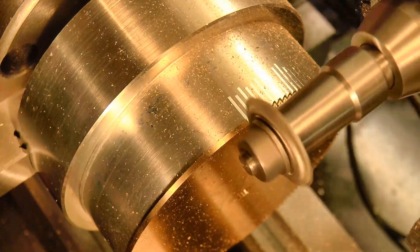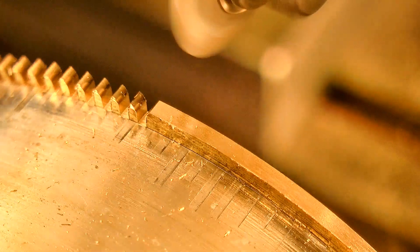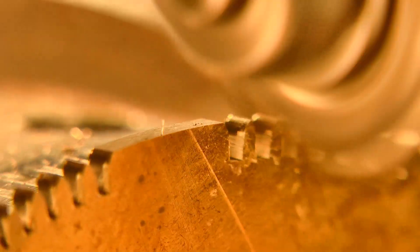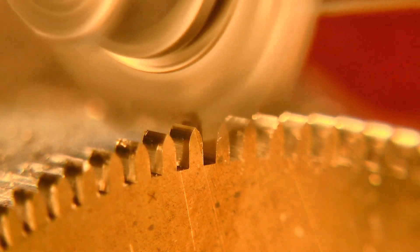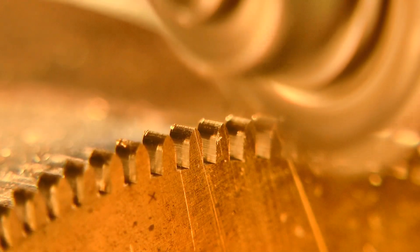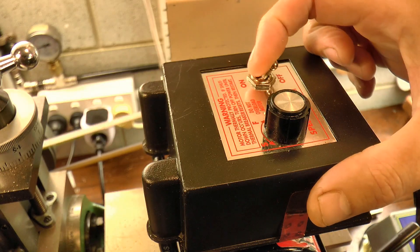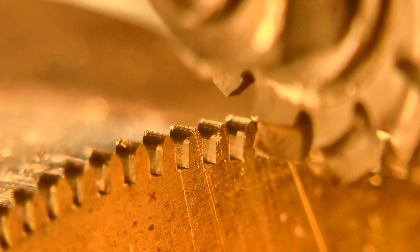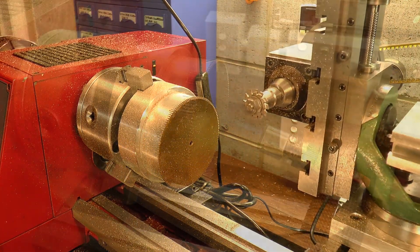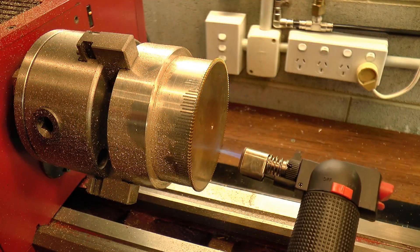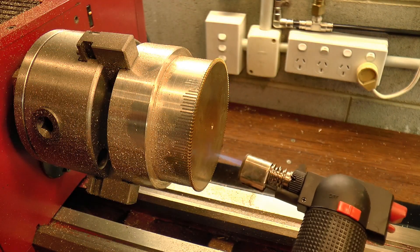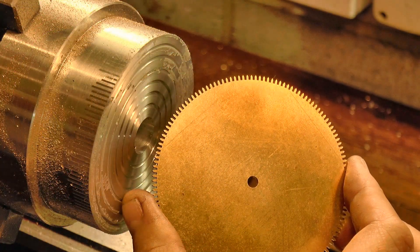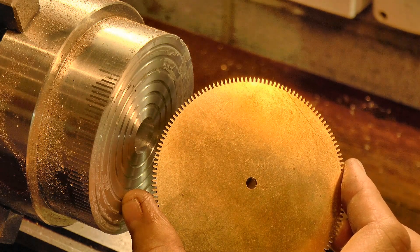After all of the setup, the actual cutting of teeth is pretty straightforward. The wheel can be taken off with a bit of heat, and each wheel is essentially cut the same way, although there are a few slight differences in each case.